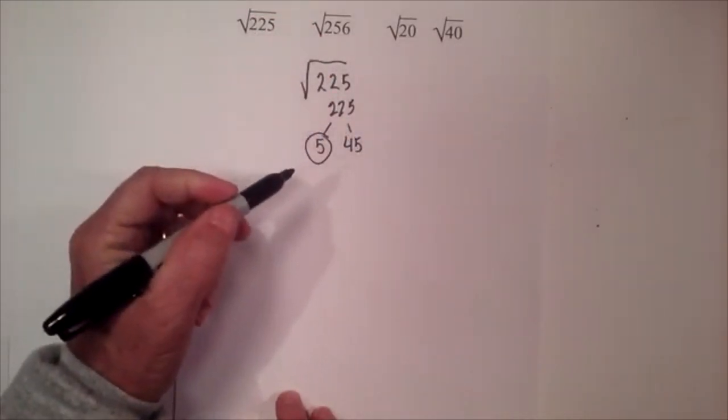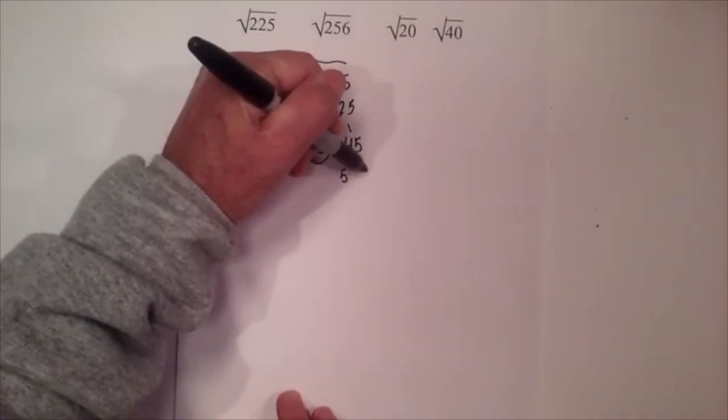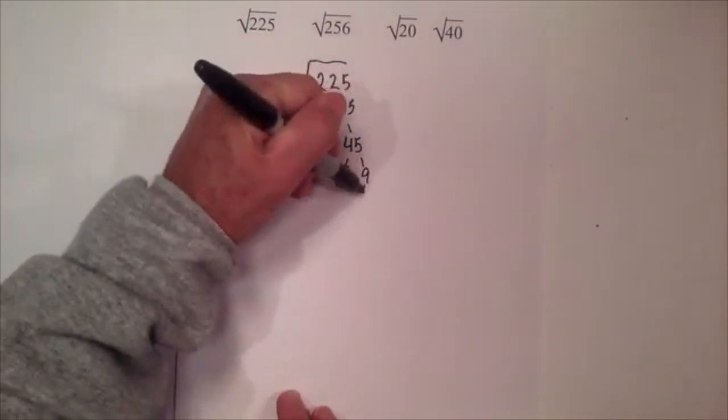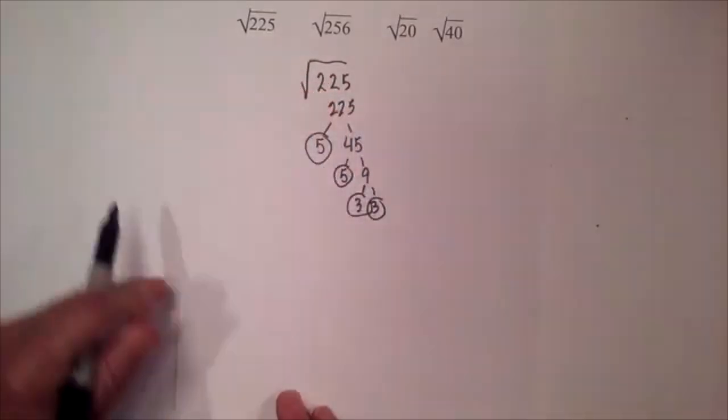I'll circle the 5 because it is prime. Now I know that 5 times 9 equals 45, and then 3 times 3 equals 9.